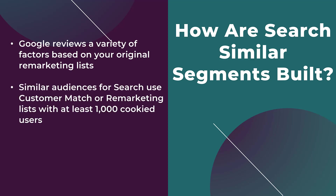These are search audiences. If you've run RLSA campaigns, you need at least 1,000 cookies for an audience to run in search. When building a similar audience from search, the original search audience needs at least 1,000 cookie users. If the audience isn't large enough, you may see in the search column that the list says incompatible. The only thing you can do is wait until you give Google more sources of information to build a better similar segment.